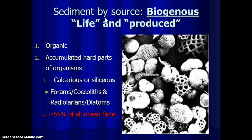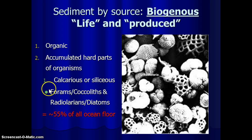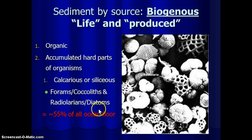The next and largest source of marine sediments is biogenous — 'bio' meaning life, 'genus' meaning produced, so produced from life. These come from organic living sources — essentially the accumulated hard parts, shells, or other hard parts of organisms after they have died. Many microscopic ocean organisms such as forams, coccolithophores, radiolarians, and diatoms form shells out of calcium or silicon. When they die, they settle down to the ocean floor, and these make up approximately 55% of all the ocean floor.